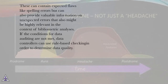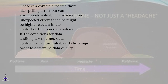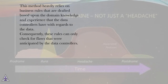These can contain expected flaws like spelling errors, but can also provide valuable information on unexpected errors that might be highly relevant in the context of bibliometric analyses. If the conditions for data auditing are not met, data controllers can use a rule-based check engine in order to determine data quality. This method heavily relies on business rules that are drafted based upon the domain knowledge and experience that the data controllers have with regards to the data.